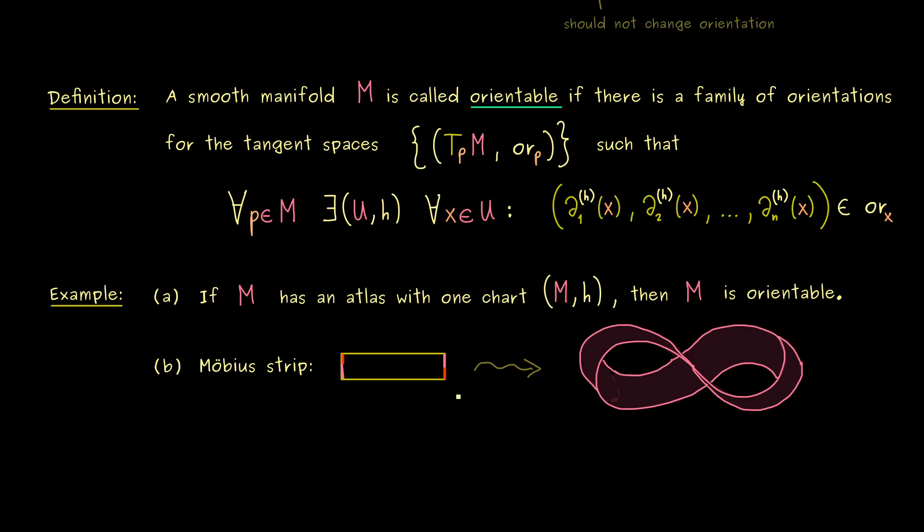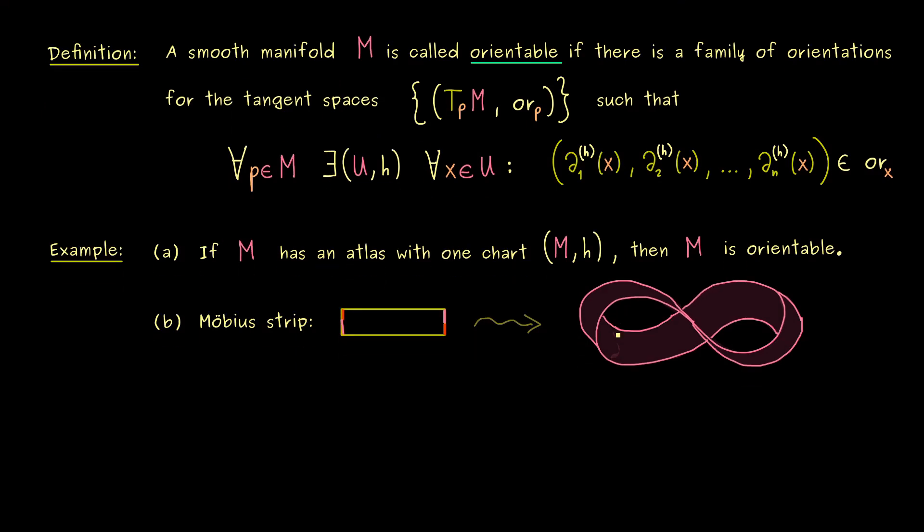And now your question should be, how can we see that this Möbius strip is not orientable at all? And I think I can sketch the idea here. So we fix a point P on the manifold, as always.